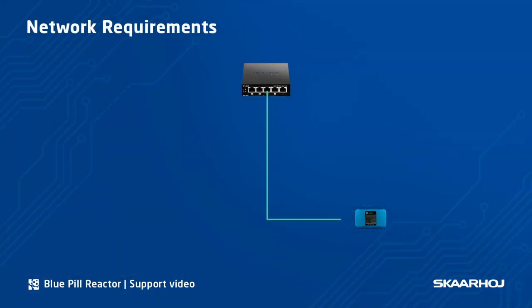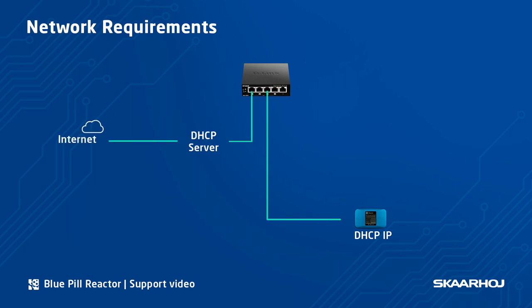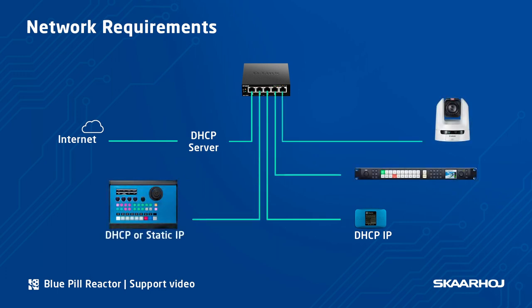Now a word on network requirements. BluePill Server is network based and leaves the factory with IP set to DHCP. For this reason we recommend you have a DHCP server in your network for initial setup. After this you are free to use a static IP address instead. Also, internet access is needed when downloading software updates and device cores. Finally, BluePill must be in the same IP range as the devices it's controlling, and the cameras, video switches and so on must have static IP addresses in order to connect to them.